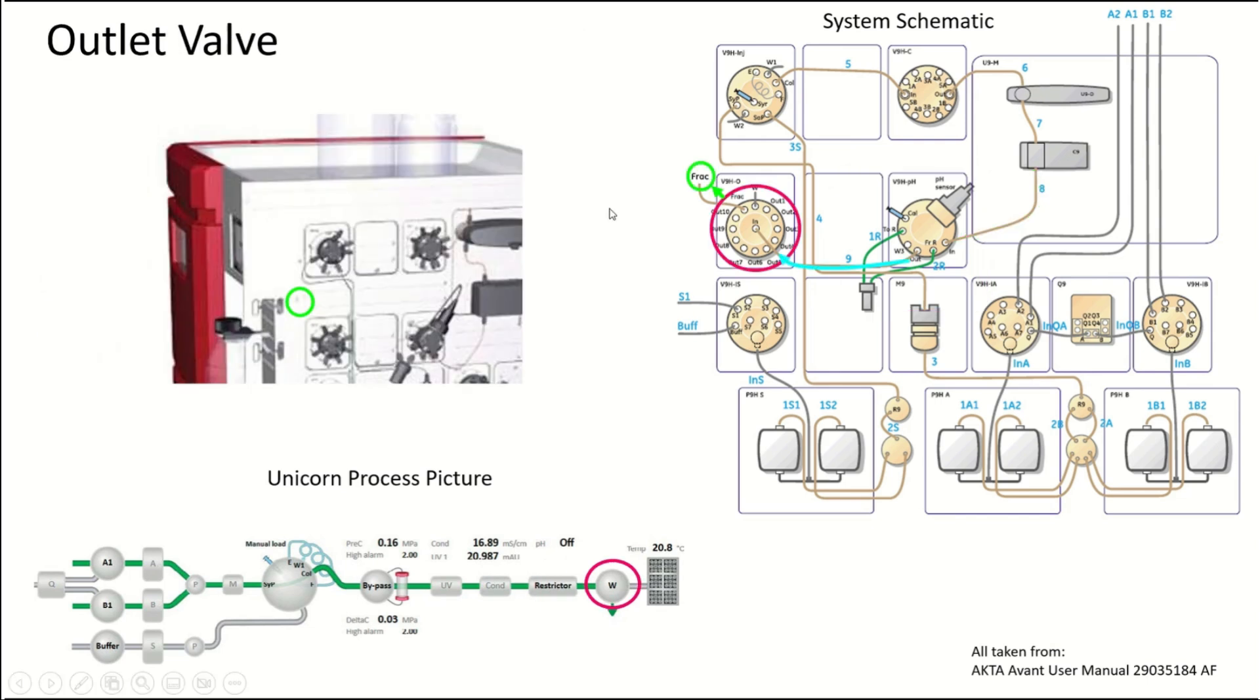After the flow restrictor, we have the outlet valve. The outlet valve has 12 different ports on it. Ten of those ports are just regular outlet valves that you can direct something towards, like a large reservoir. The other two—one of them leads to the fraction collector, and the last one goes to waste.